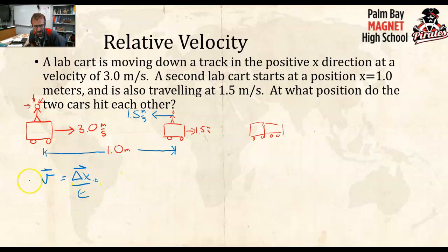And then I need to get T by itself, so let's divide by velocity. This is going to yield the equation: time is equal to displacement over velocity. And actually I'm going to go ahead and plug in my numbers, which is ΔX is 1.0 meters, and this guy is coming towards me at 1.5 meters per second. And if I do 1 divided by 1.5...